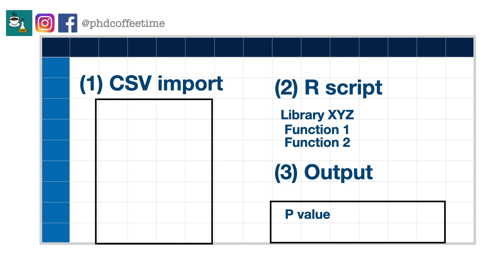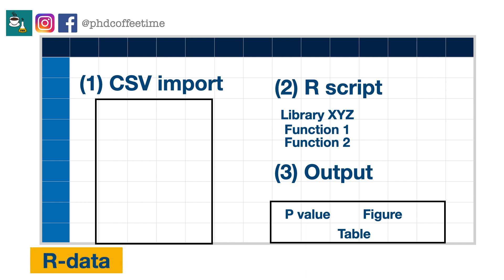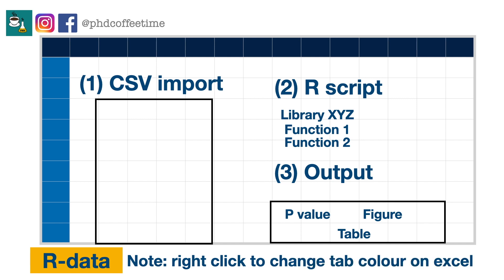The output could be a p-value that you copy and paste, some data table, or a figure exported as a JPG file. A pro tip: you can right-click on your tab and change the tab color, so you are able to index your Excel spreadsheet in a more intuitive way.